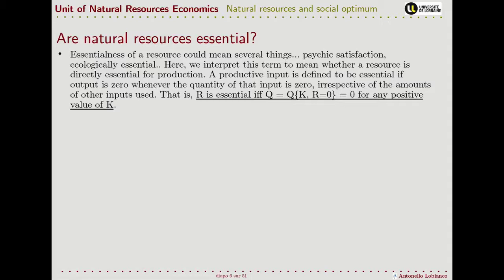Let's focus on the last point from the previous slides: how do we define essentialness? Essentialness can be defined in several ways, but we take a very narrow interpretation. We define a resource input factor — in particular a natural resource — as essential if and only if, in a production function that depends on k and r, the output equals zero when we set r equal to zero, for whatever positive value of k.